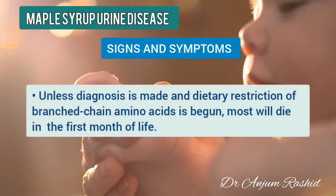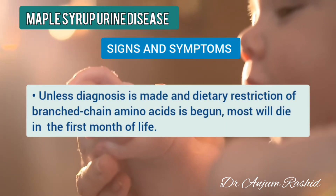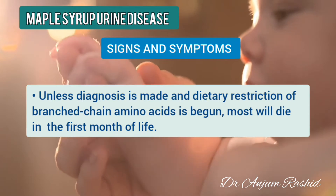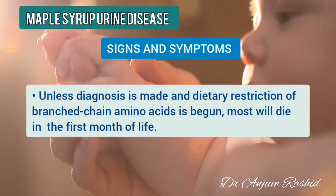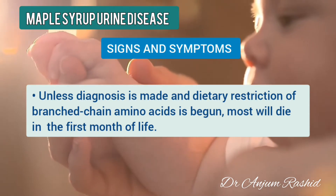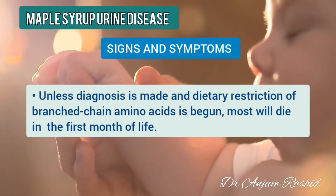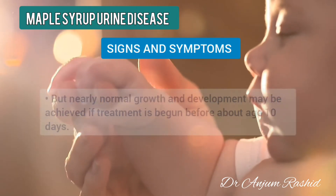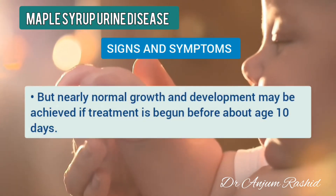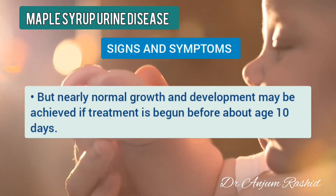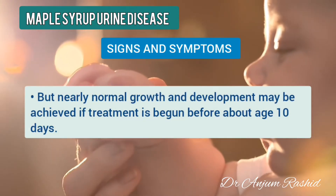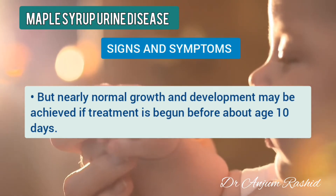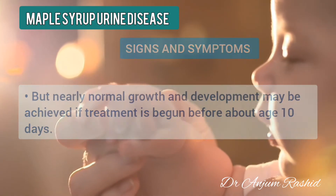Unless the diagnosis is made and dietary restriction of branch chain amino acids is begun, most babies will die in the first month of life. However, nearly normal growth and development may be achieved if treatment is begun before about age 10 days.